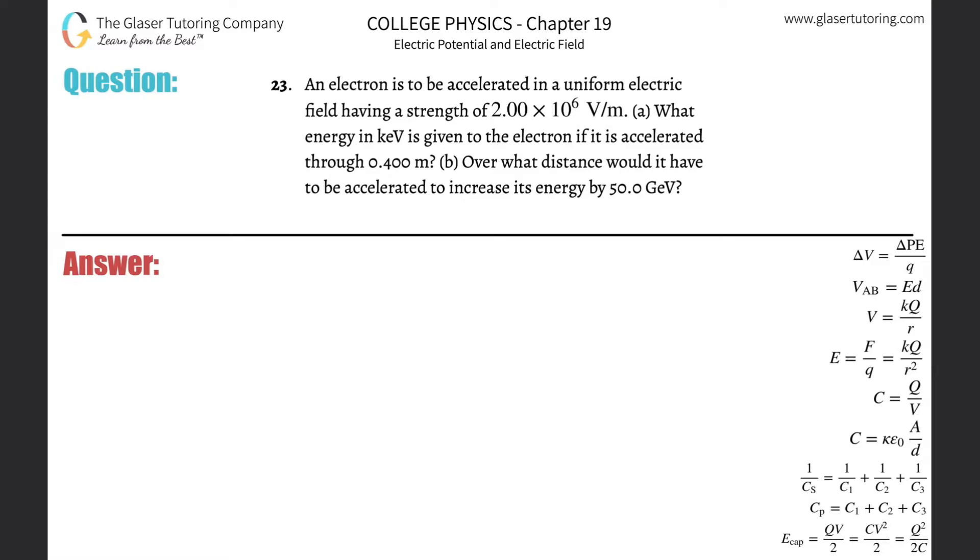Number 23. An electron is accelerated in a uniform electric field having a strength of 2 times 10 to the 6 volts per meter. Letter A: What energy in kilo electron volts is given to the electron if it is accelerated through 0.4 meters?